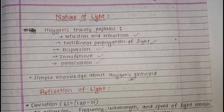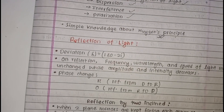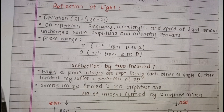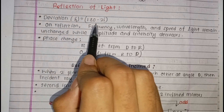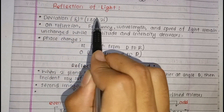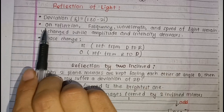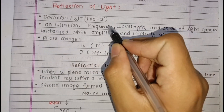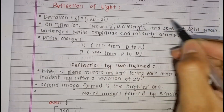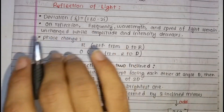I am going to talk about Reflection of Light. Reflection of Light is more general. The deviation is 180 degrees minus 2i, where i is the angle of incidence. On reflection, frequency and wavelength and speed of light remain unchanged.